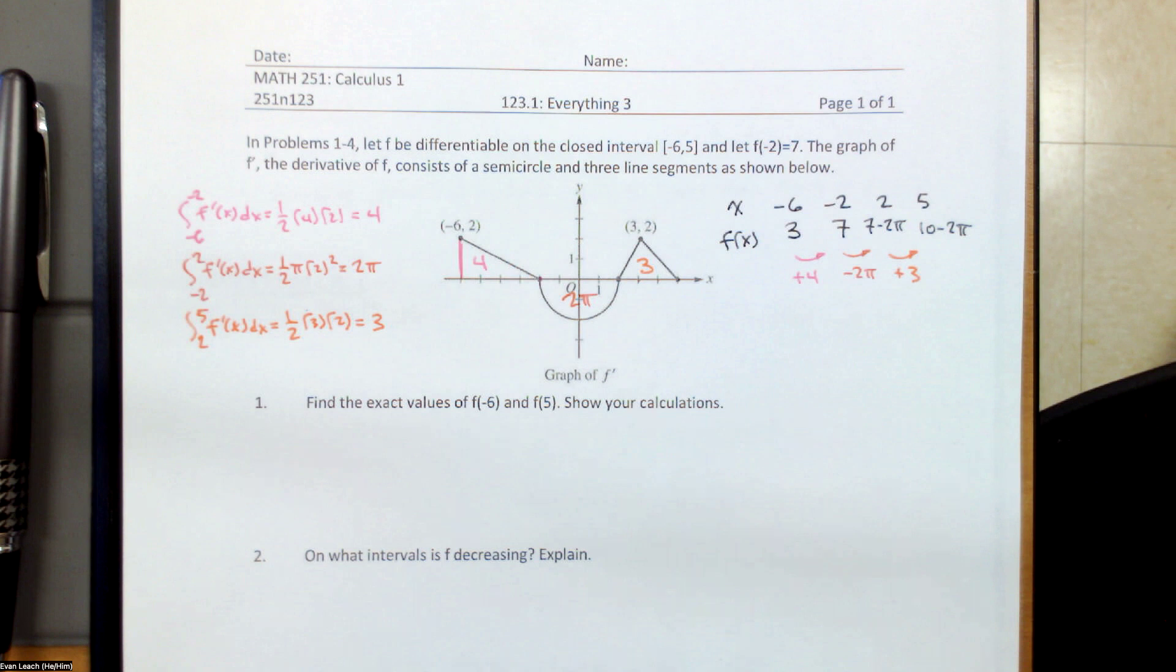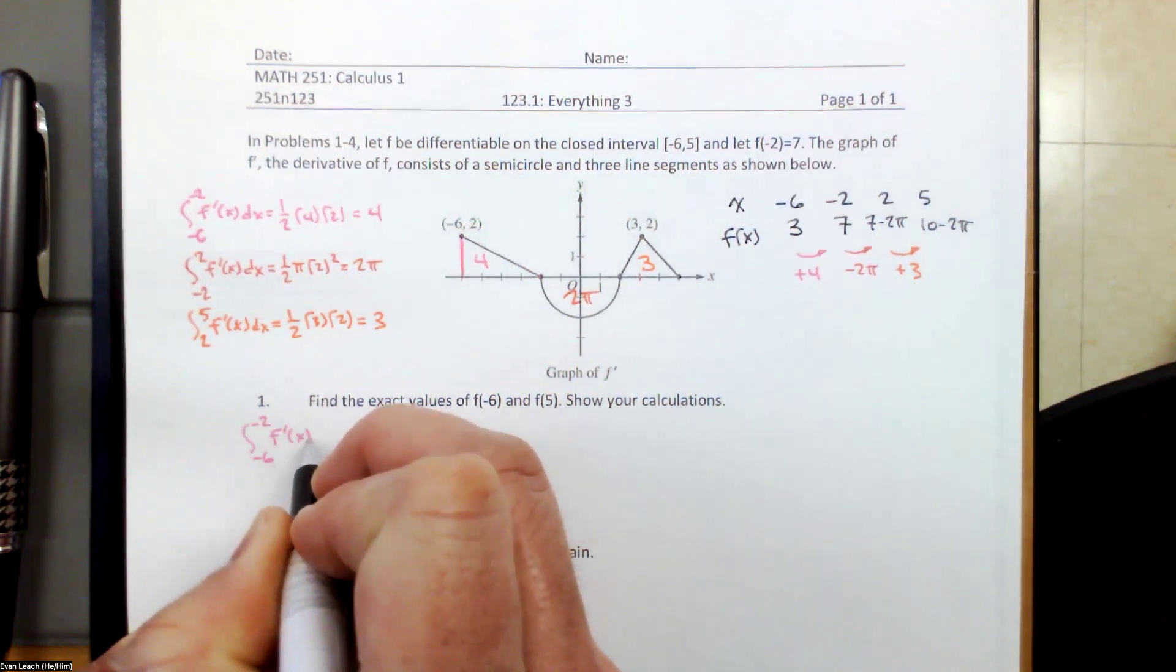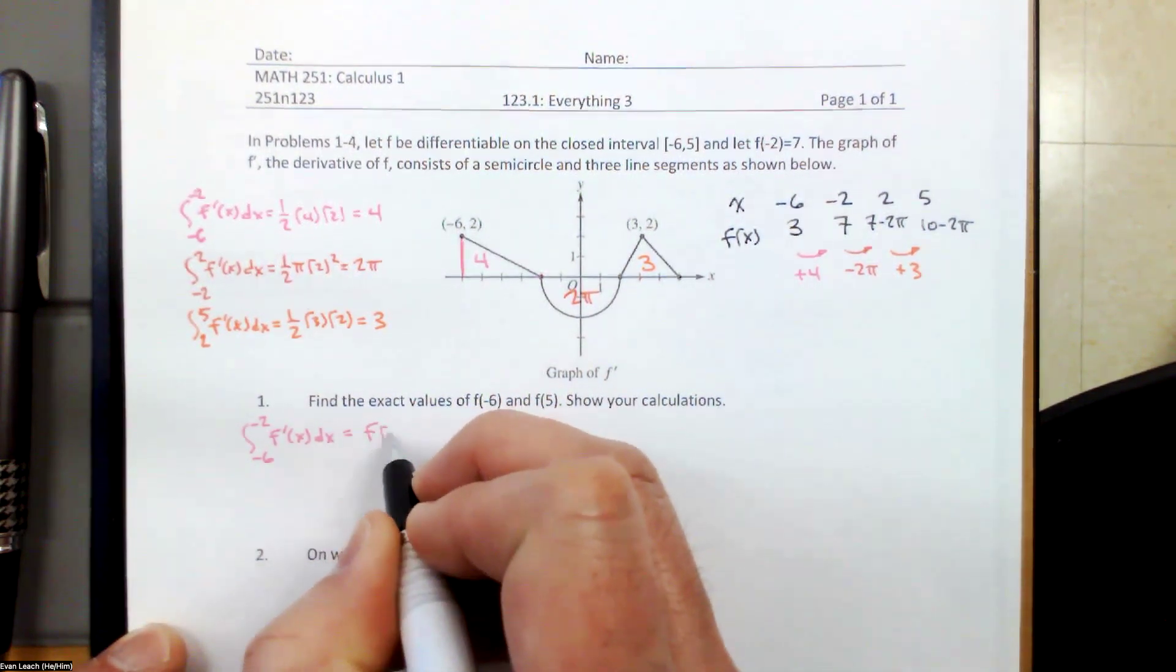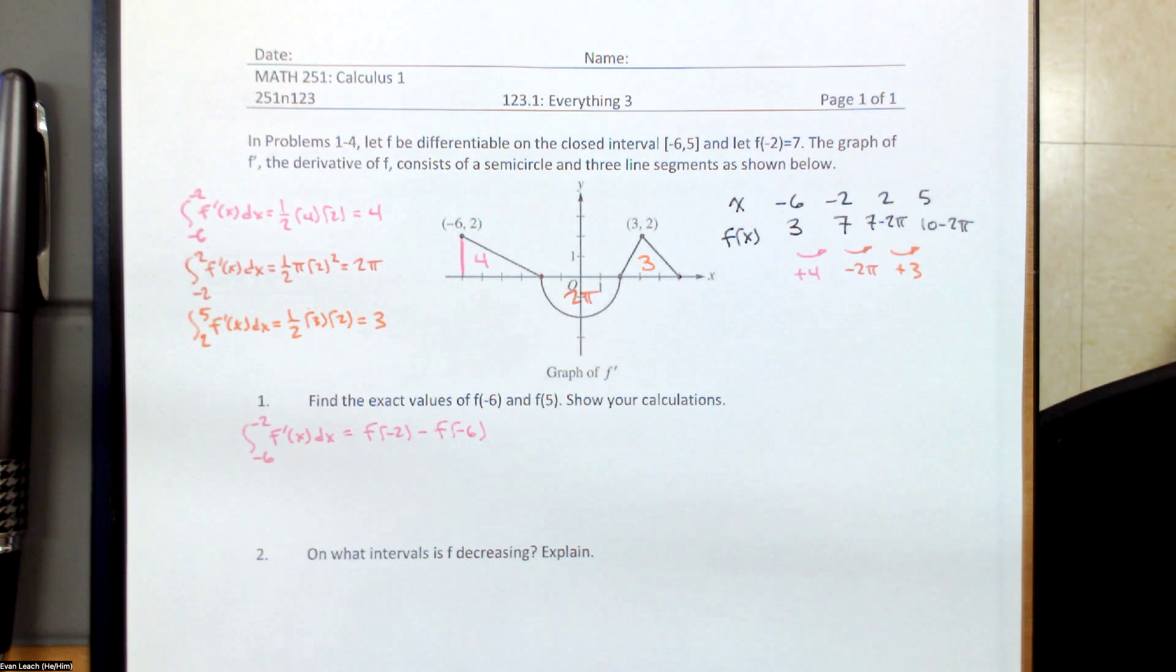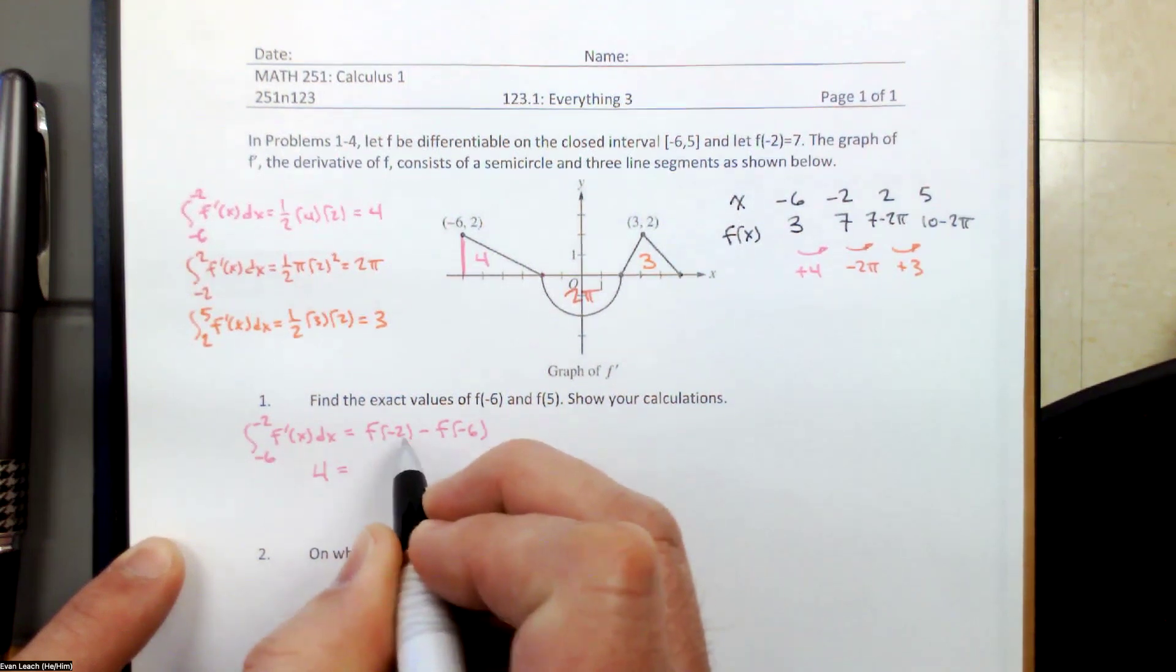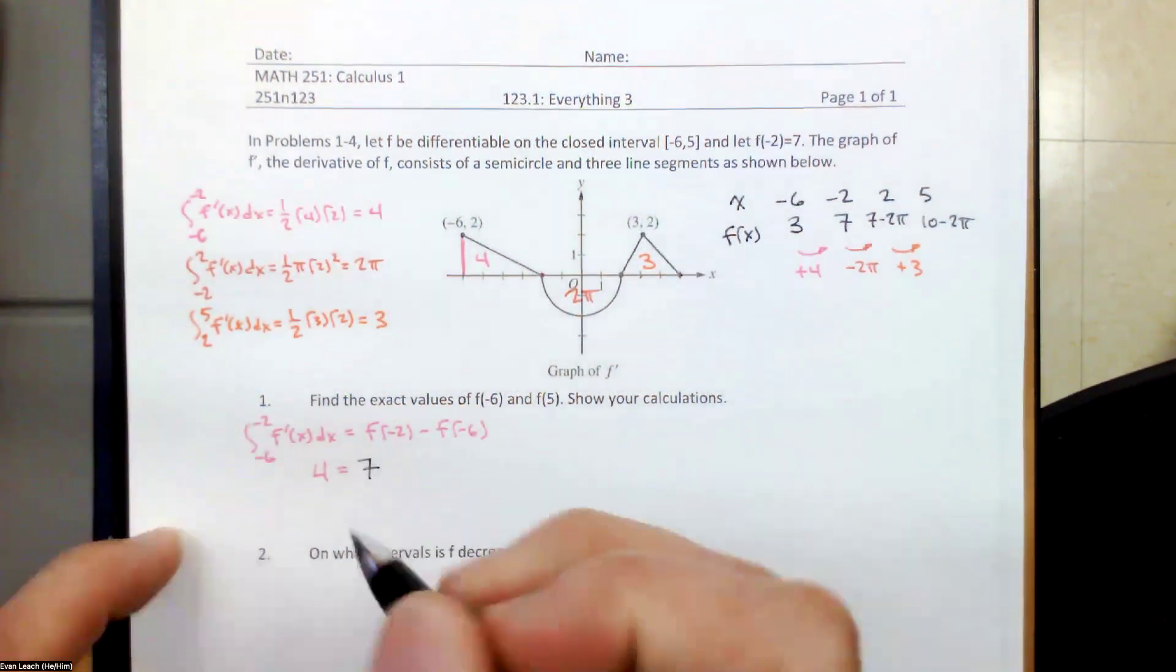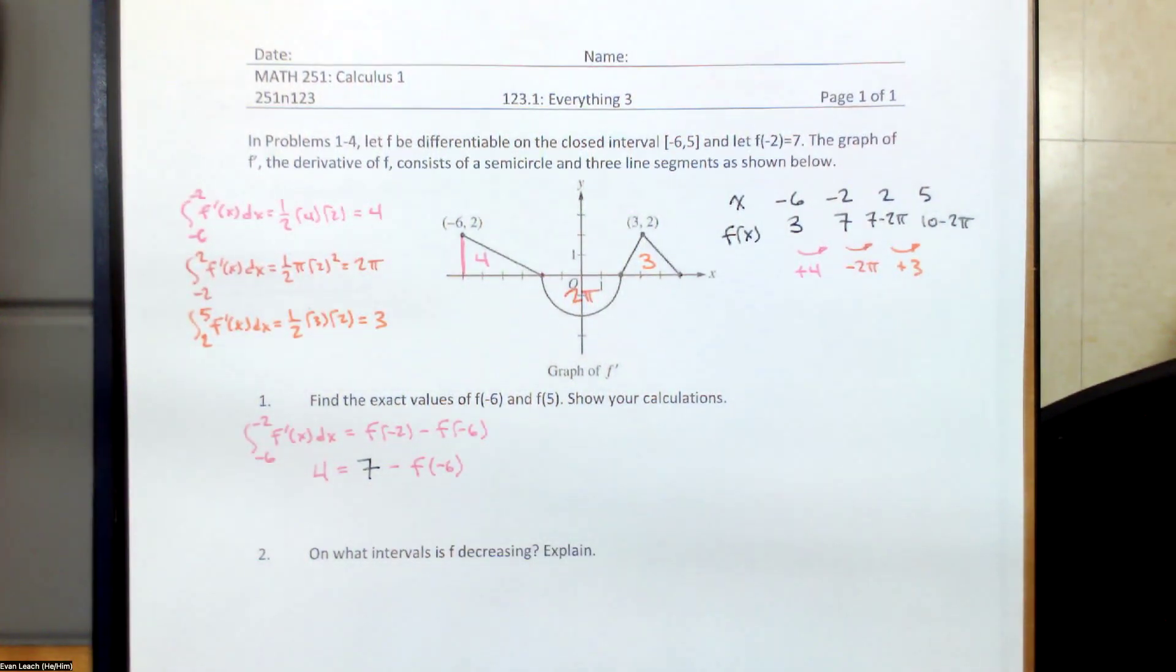If we look at the definite integral from negative 6 to negative 2 of f prime of x dx, we know that this is 4. We also know from the fundamental theorem of calculus that this is f at negative 2 minus f at negative 6. So this is just our fundamental theorem of calculus. The area tells us that the definite integral from negative 6 to negative 2 of f prime of x dx is equal to 4. f of negative 2 is given as 7, and f of negative 6 is what we're looking for. If we rearrange this, we find that f of negative 6 is 7 minus 4.